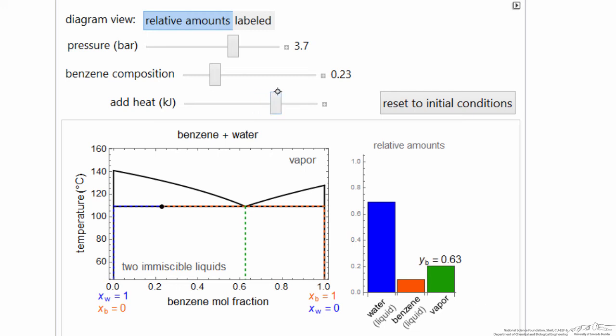And as I continue to add heat, now I've reached the point where I've just evaporated all the benzene. Now I have liquid water in equilibrium with water and benzene in the vapor phase, and the relative amounts are indicated by the bar graph.